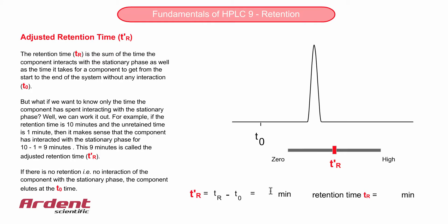The retention time TR is the time it takes for a component from when it enters the system to when it exits the system. This total time is the sum of the time the component interacts with the stationary phase, as well as the time it takes for a component to get from the start to the end of the system without any interaction. Of course, we've just seen this time is called the unretained time or the T0 time.